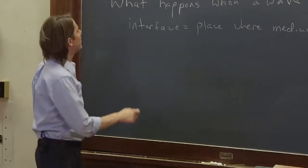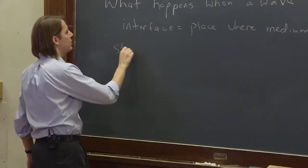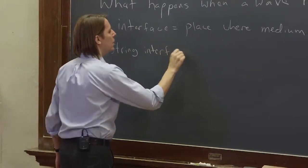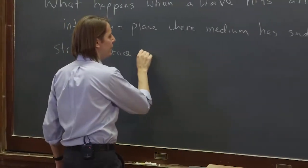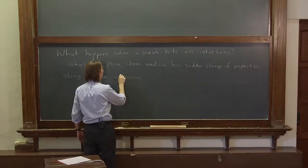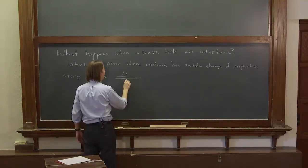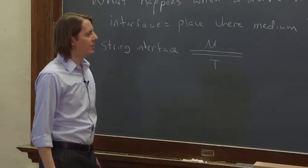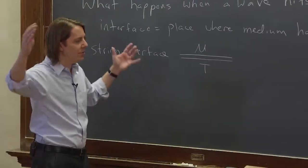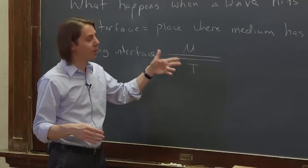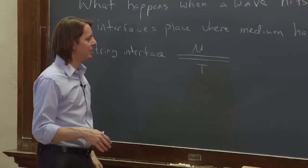So if we want to look at a string interface, we might think of it like this. Maybe you have your normal string here, and we know the only properties of the string we've thought about are the mass density and the tension. Those together give you the velocity, and that's pretty much all there is.